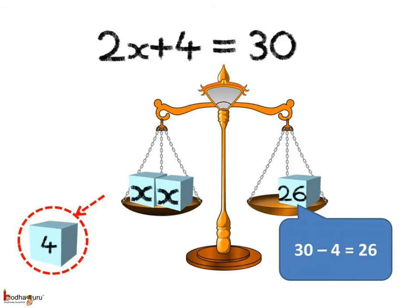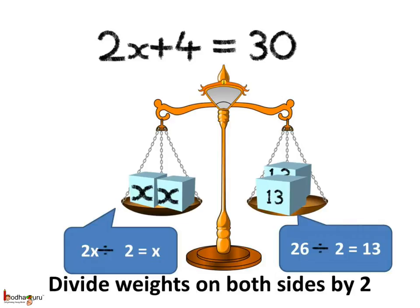On the left hand side pan, 2x are remaining, and on the right hand side it is 30 minus 4, which is equal to 26. Now, the weight of 2x is 26. So the weight of a single x — how do we get it? Simply divide by 2. Here, we also have to divide 26, which is on the other pan, by 2 to maintain the balance.